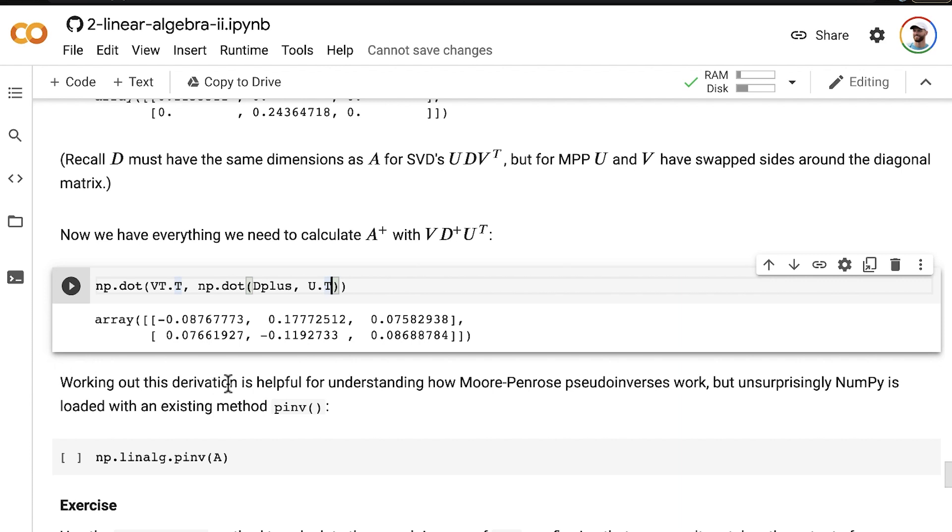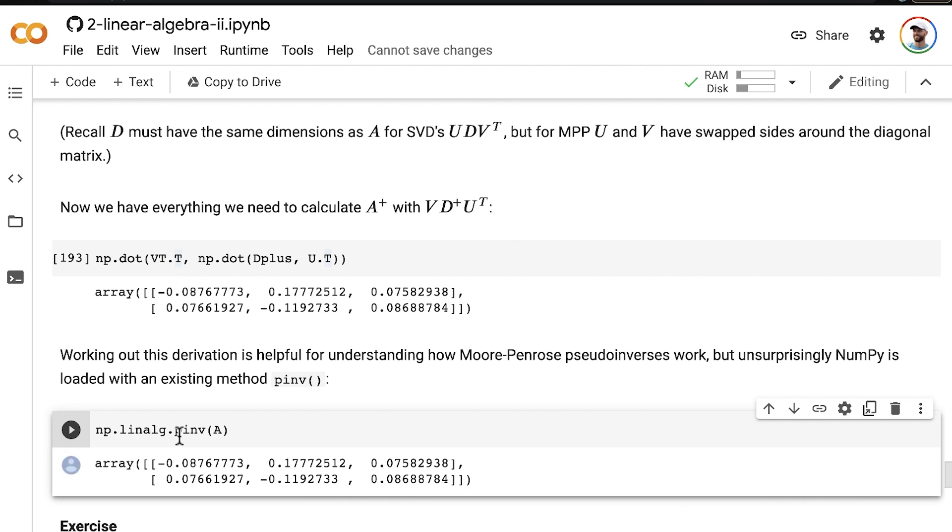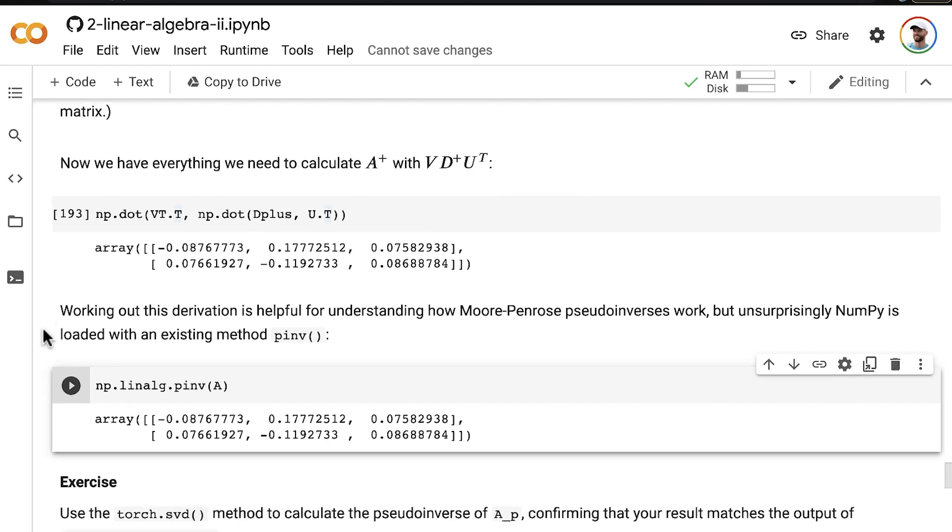Working out this derivation is helpful for understanding how Moore-Penrose pseudo-inverses work, where they come from. But, unsurprisingly, NumPy is loaded with an existing method, pinv, that calculates the pseudo-inverse. So, we could have just thrown our original matrix A into that pinv method, and voila, you get exactly the same results as if we do it somewhat manually using singular value decomposition. But, that also gives us the opportunity to tie singular value decomposition to the Moore-Penrose pseudo-inverse.